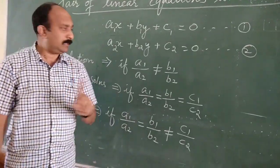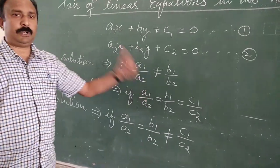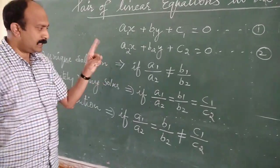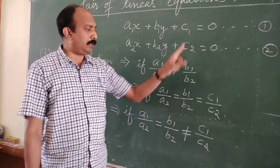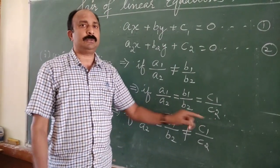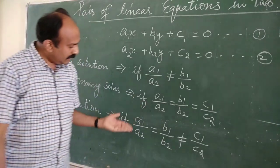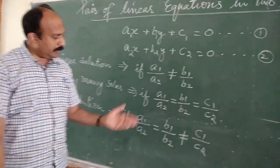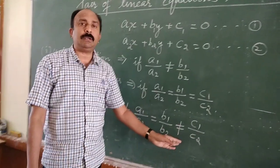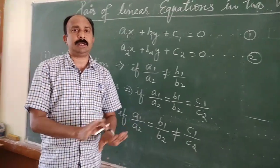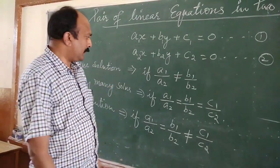To summarize: if a1 upon a2 is not equal to b1 upon b2 — unique solution. If a1 upon a2 equals b1 upon b2, and equals c1 upon c2 — infinitely many solutions. If a1 upon a2 equals b1 upon b2, but not equal to c1 upon c2 — no solution.